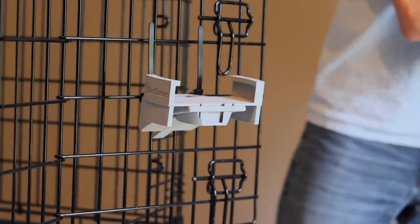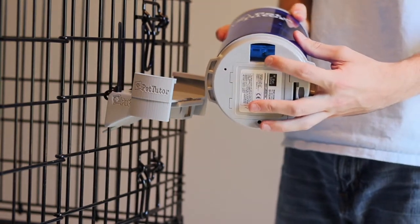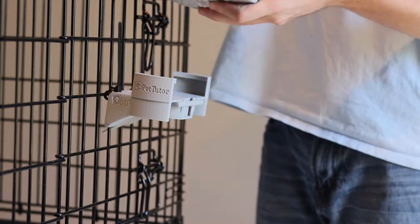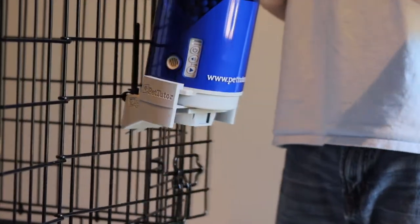The last thing to do is to add the feeder onto the crate mount, but watch the orientation of that hole. Make sure that hole ends up being lined up over top of the crate mount itself.